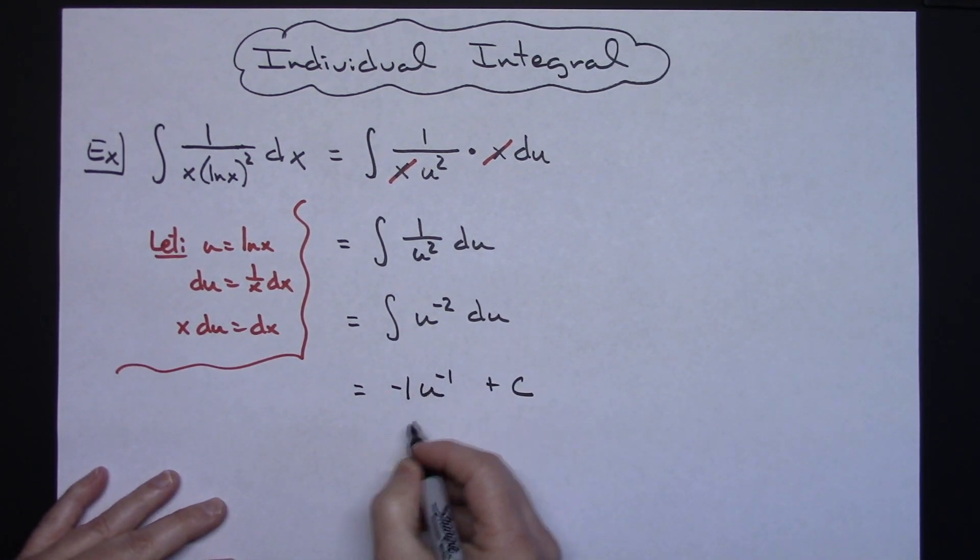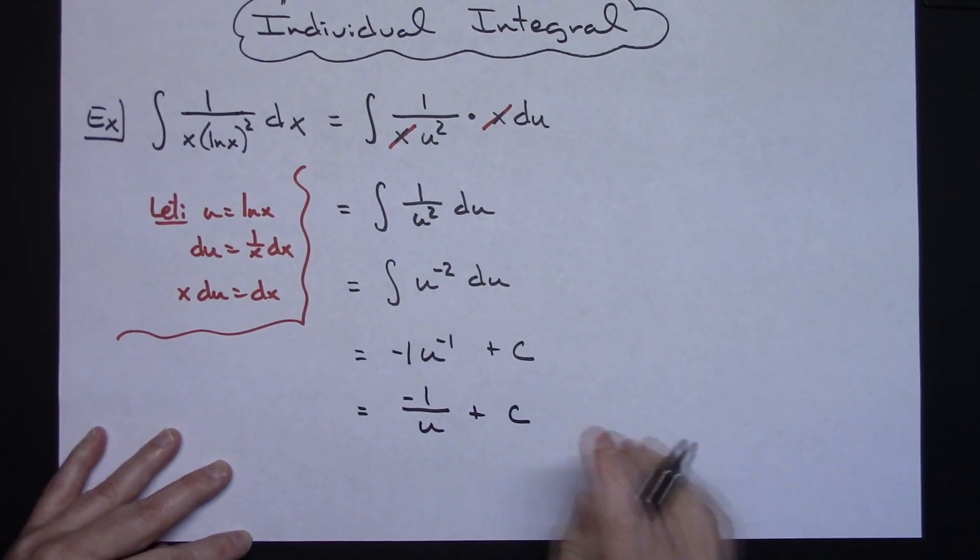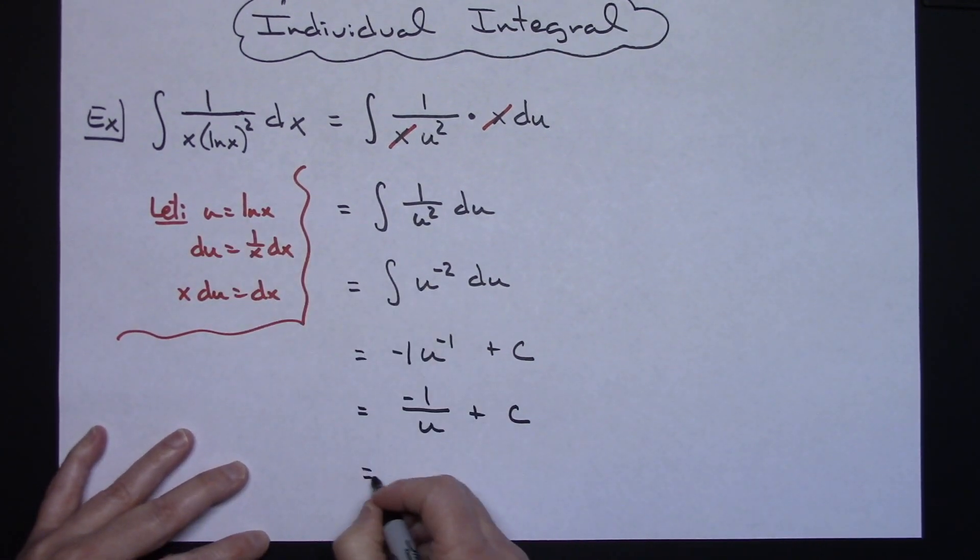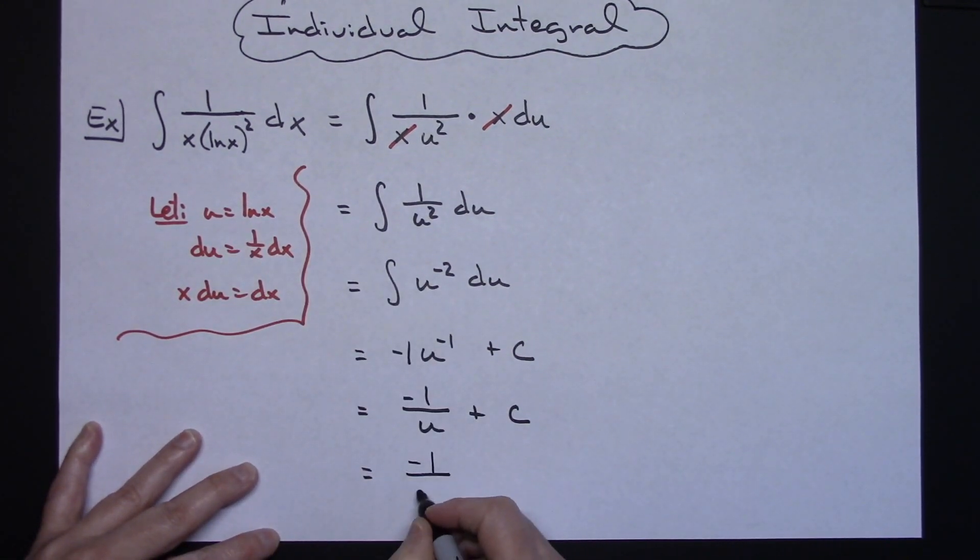We're going to go ahead and move this to the denominator, so I have a negative 1 over u plus c, and I can replace u with what I originally let it to be equal to. So a negative 1 over natural log of x plus c.